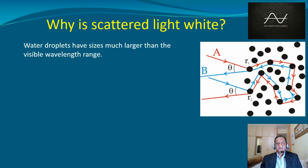Now, the water droplets have sizes around 100 to 1000 times the sizes of the wavelength of the visible spectrum, which is violet to red.